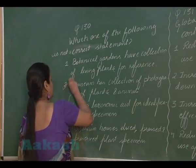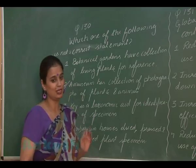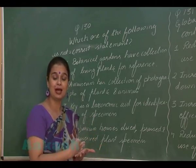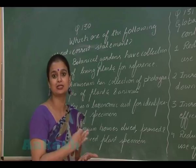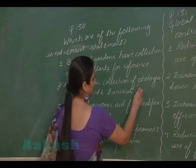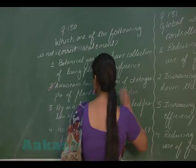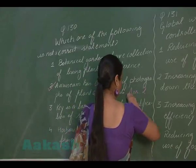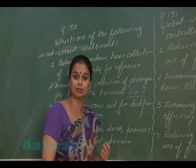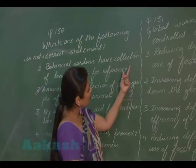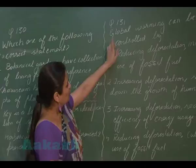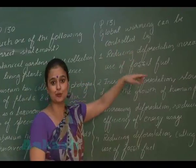The museum description is incorrect because museums possess both plant and animal preserved specimens. So the right answer for question 130 is option 2. Now moving to question 131: global warming can be controlled by which of the following?